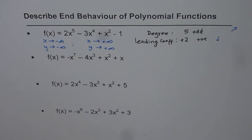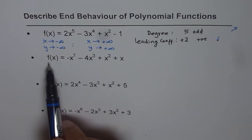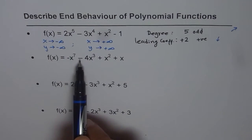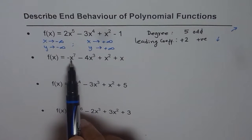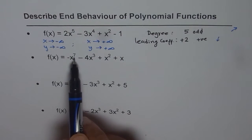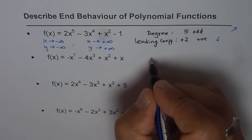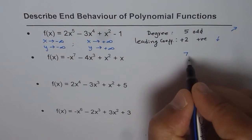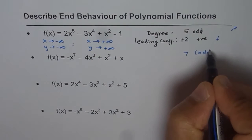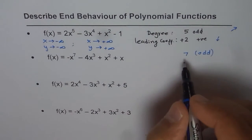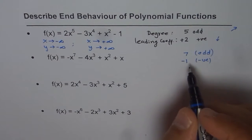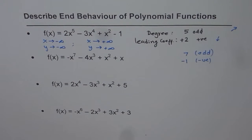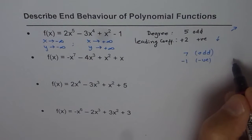Now let us look at the second example: f(x) = -x⁷ - 4x³ + x² + x. Here, the degree is 7, which is odd. And the leading coefficient is -1, which is negative.